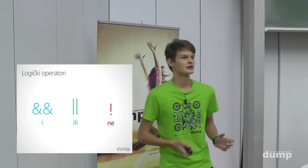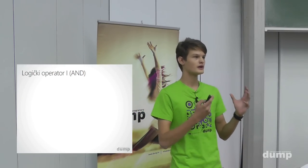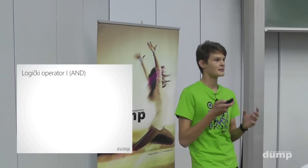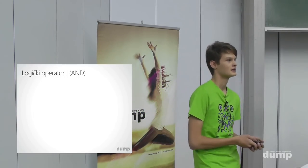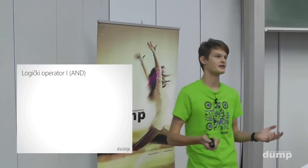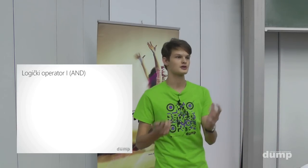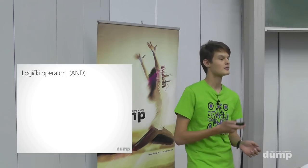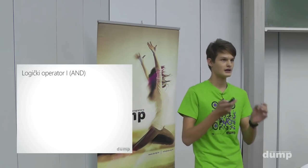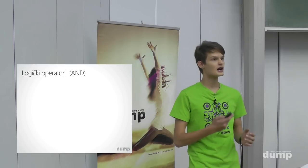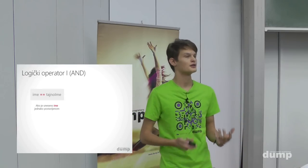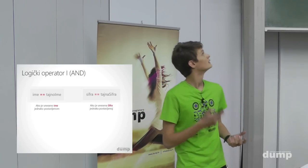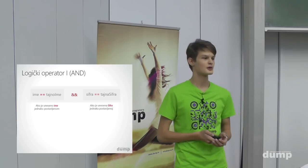Logički operator 'i' koristimo kada želimo da nam konačni uvjet bude istinit samo ako su svi uvjeti od kojih je sastavljen istiniti. Na primjer, kad se prijavljujemo na nekakvu stranicu — moramo ispuniti uvjete i korisničkog imena i lozinke. Ako je uneseno ime jednako tajnom imenu I šifra jednaka tajnoj šifri, ispisujemo korisniku da se uspješno prijavio.